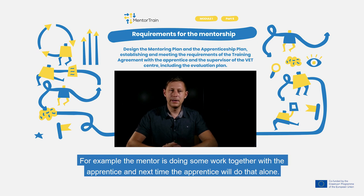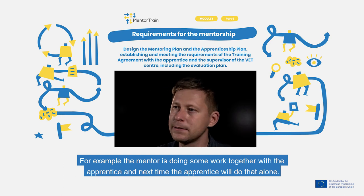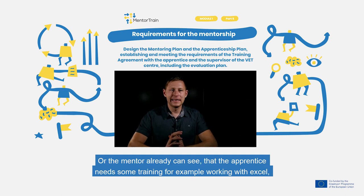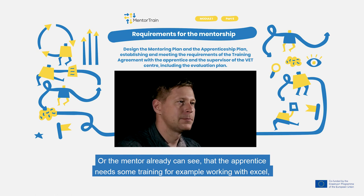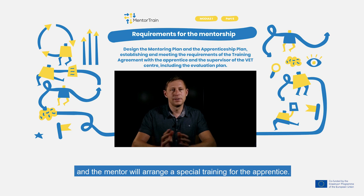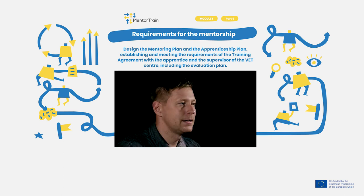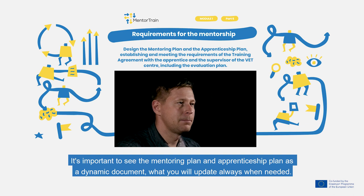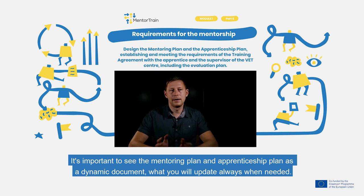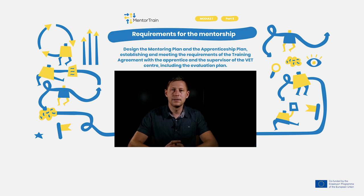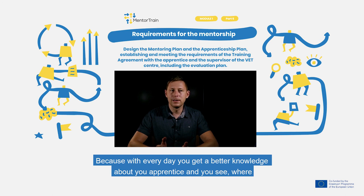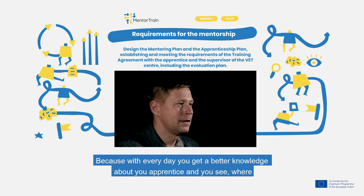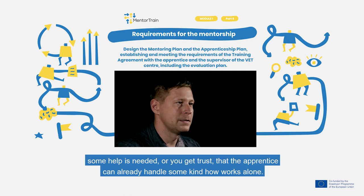How the mentor will do that must be included in the mentoring plan. For example, the mentor does some work together with the apprentice, and next time the apprentice will do it alone. Or if the mentor can see the apprentice needs some training — for example, working with Excel — then the mentor will arrange a special training. It is important to see the mentoring plan and the apprenticeship plan as a dynamic document that you will update whenever needed, because with every day you gain better knowledge about your apprentice and see where some help is needed.